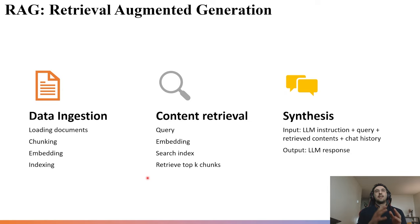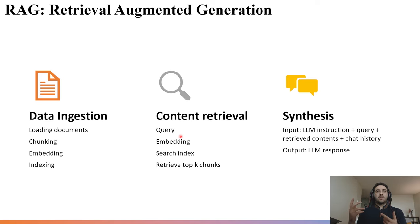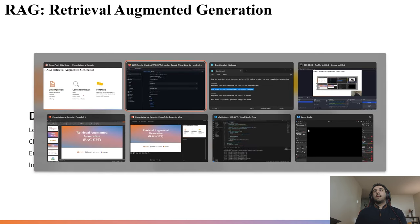The second step is content retrieval. After we have the vector database, if we have a query, we pass it to an embedding model, get the query's embedding, and then perform a similarity search against our vector database. Based on a score for each chunk, we retrieve the top-k chunks with the highest scores — these are the most relevant contents to our query.